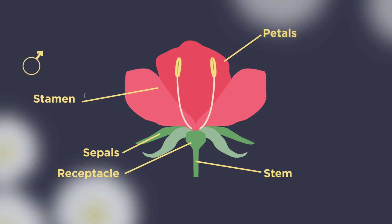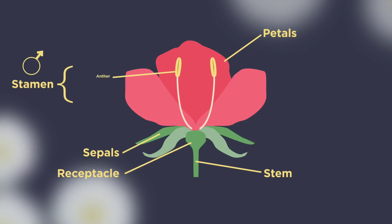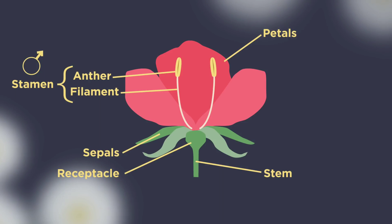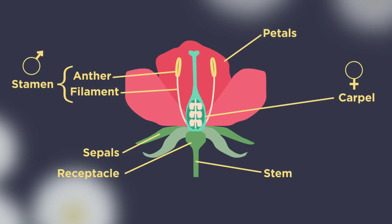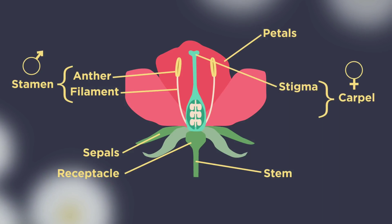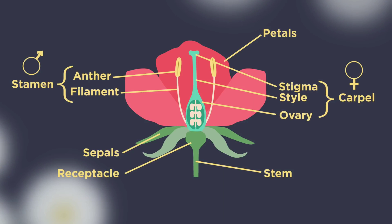The stamen is the male part of the flower. It consists of an anther, where pollen is produced, and the filament, which is the stalk that supports the anther. These structures are responsible for the production and positioning of pollen, the male gametes. The female part of the flower is called the carpel, and this consists of three parts: the stigma, a sticky landing for pollen; the style, where the pollen grain descends; and the ovary, where the female gametes are located.